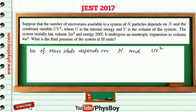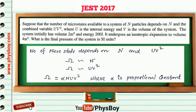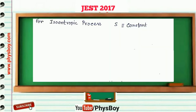In this problem, the number of microstates available to the system depends on the number of particles N and the combined variable UV². So we can write the number of microstates Ω equal to some proportional constant times N times UV². For an isentropic process, S is equal to a constant, so the change in entropy dS equals zero.